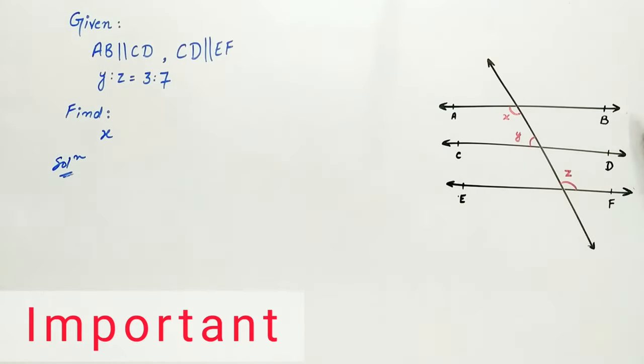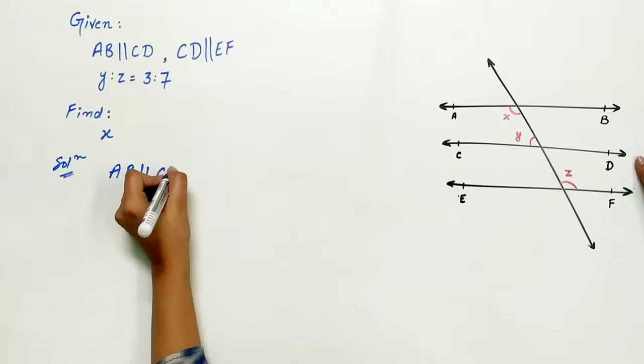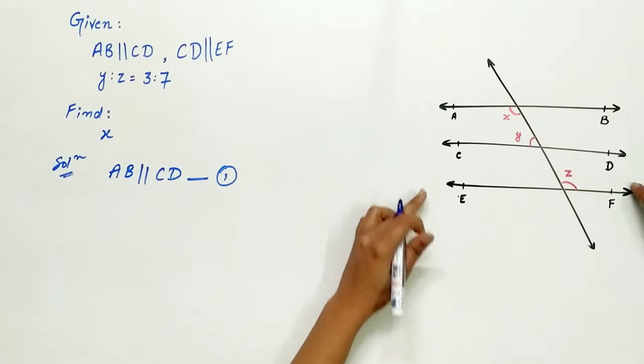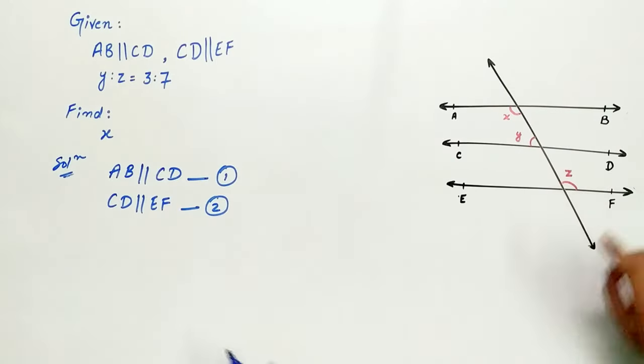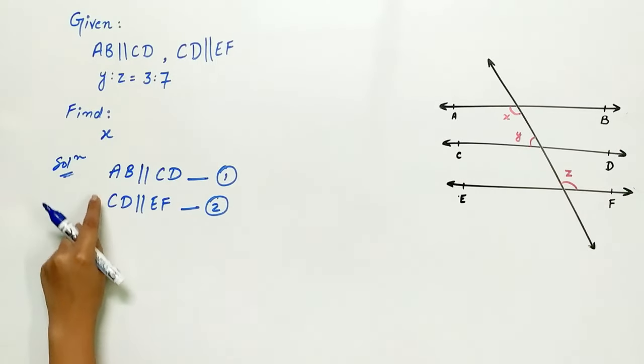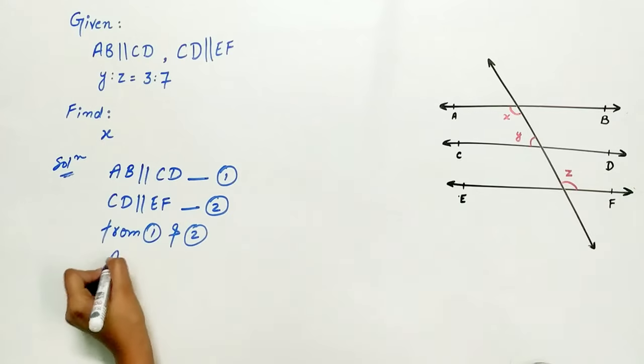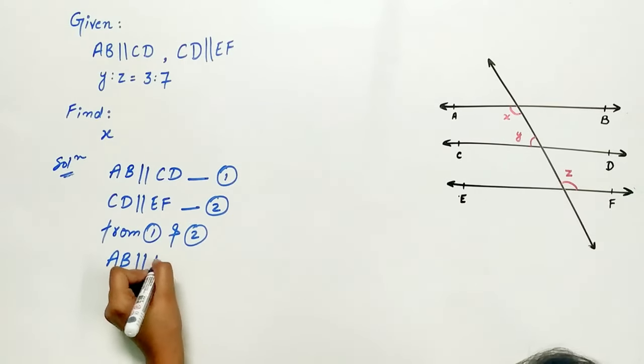Listen carefully. AB is parallel to CD. CD is parallel to EF. Then, from the first and second statements, AB is parallel to EF.